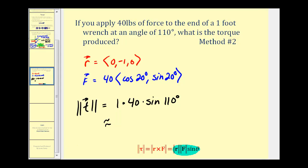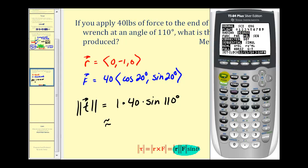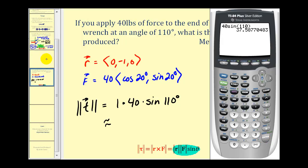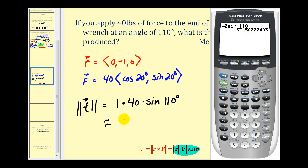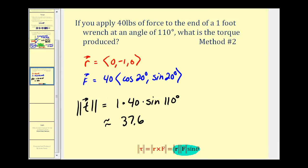Let's check it on the calculator — making sure it's in degree mode. Forty times sine one hundred ten degrees gives approximately thirty-seven point six, the same result as before. The units are pound feet. As you can see, setting up and solving using this second formula was much easier and much faster, though either way the result is obviously the same. Even though this is an application of cross products, it's much easier to solve using the magnitude formula.